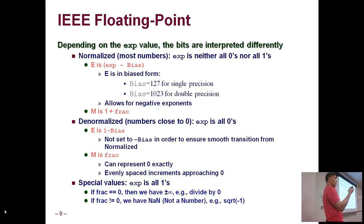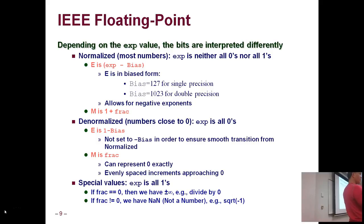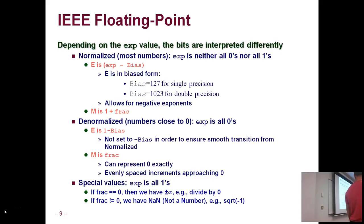There are special values. If the exponent field is all ones and the fraction field is zero, this encodes positive or negative infinity based on the sign bit — basically what happens when you divide by zero. If the exponent field is all ones and the fraction field is non-zero, this is Not a Number (NaN) — for example, the square root of negative one. These are special code points for those kinds of numbers.